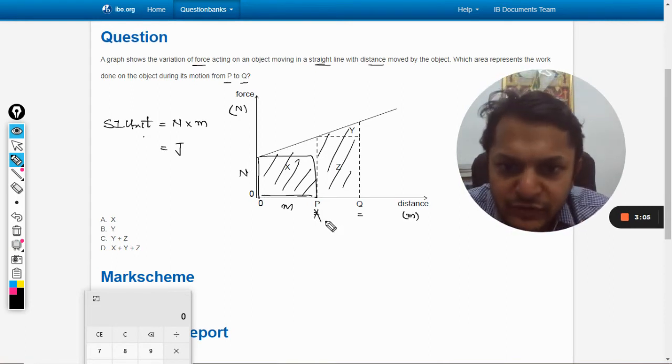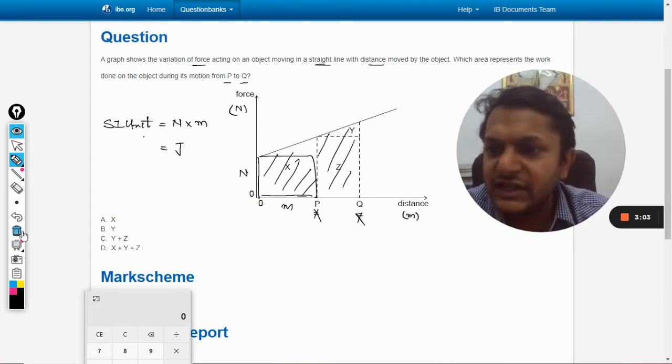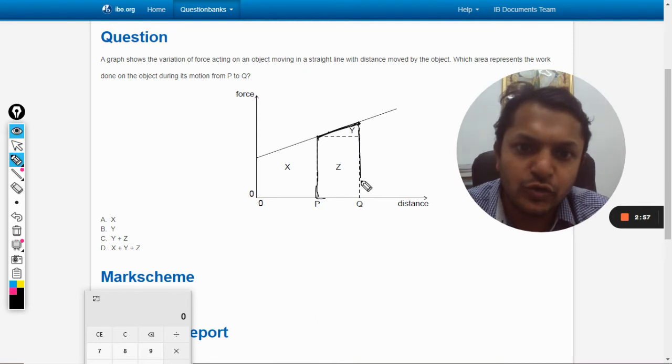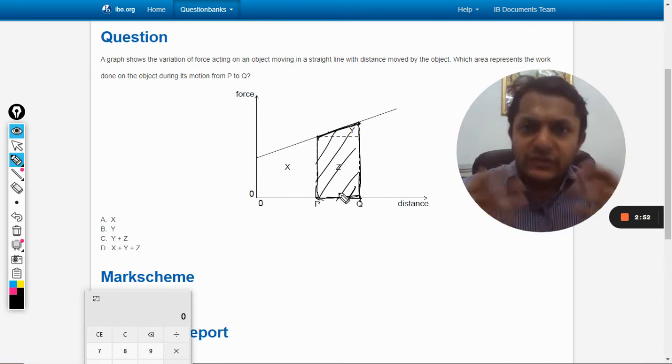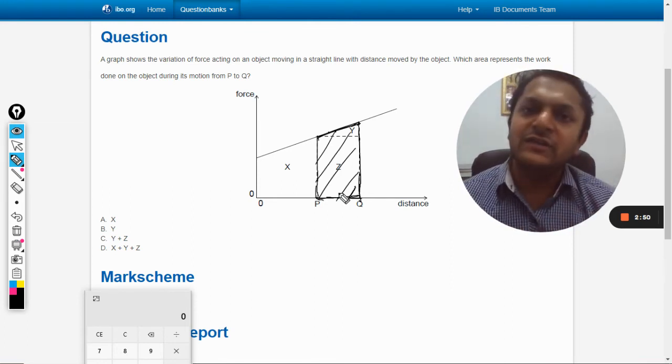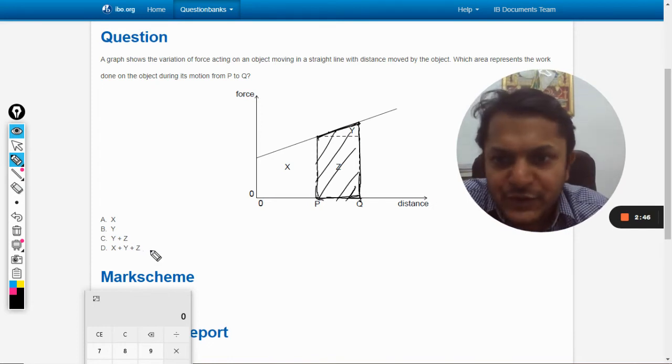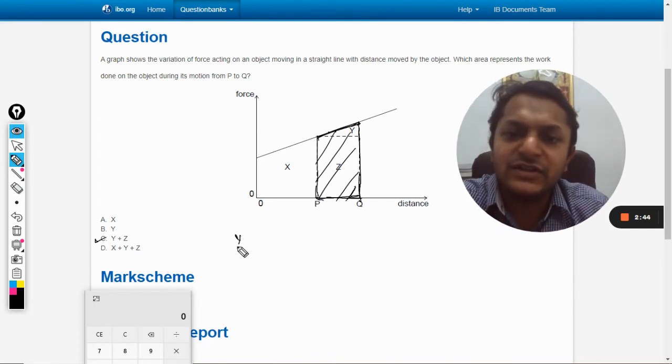So now the body is moving from p to q, so obviously the area that is under the curve from p to q should be your answer. This should give you the work that was done on the body when it was moving from p to q. So according to our options, the answer should be c, which is y plus z.